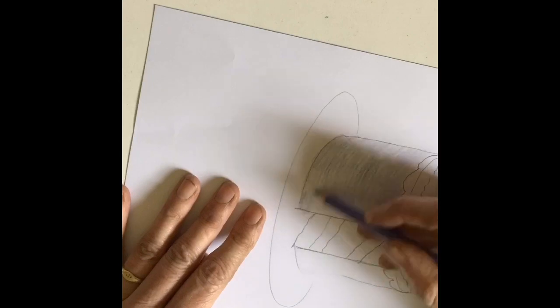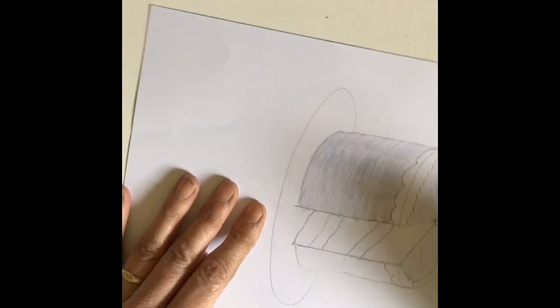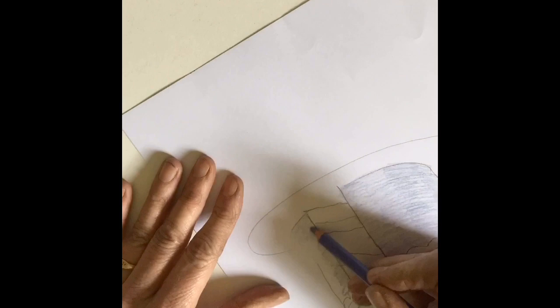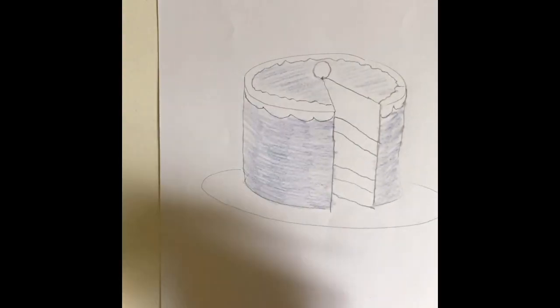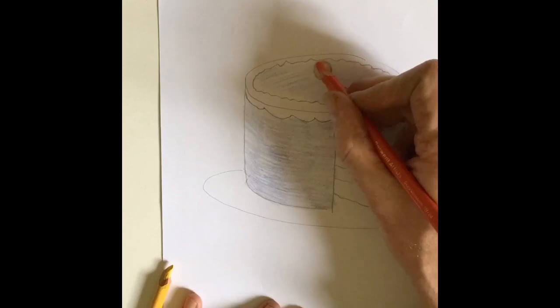Rather than just scribbling on my shading, I'm going to go around in sort of a circly type effect which looks really good. It actually looks like icing.